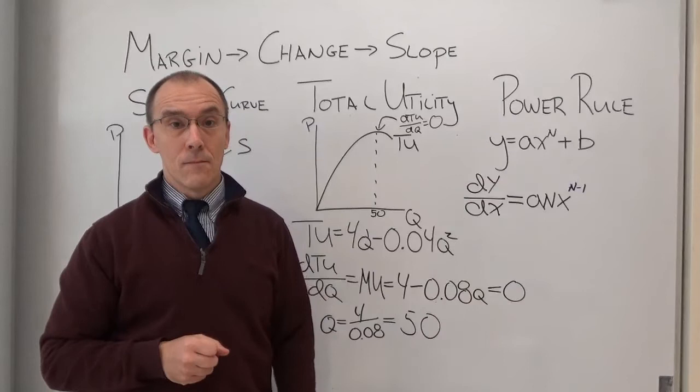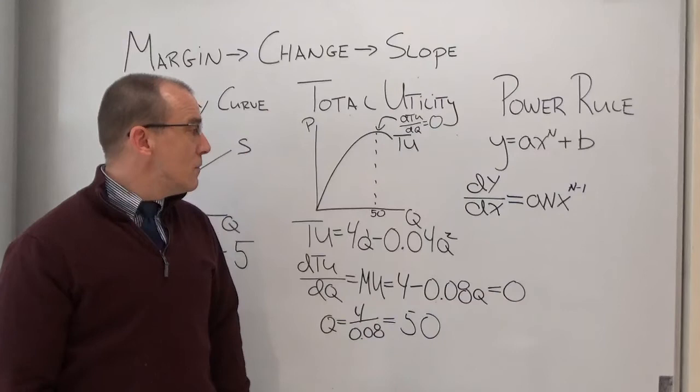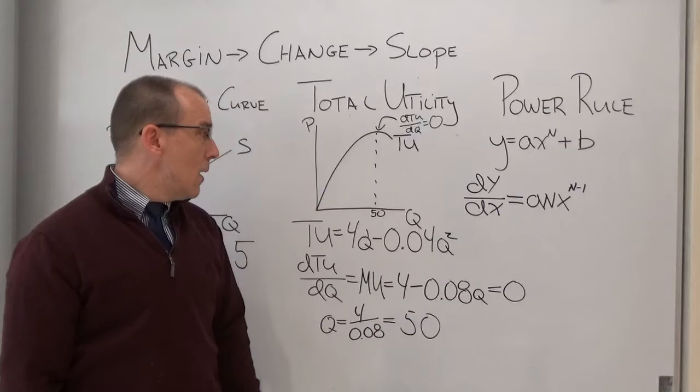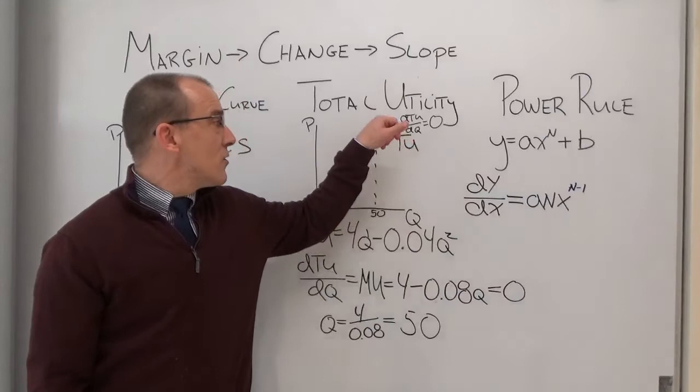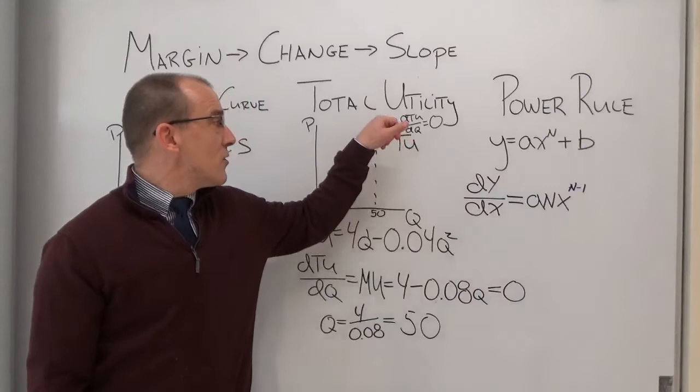So basically, the power rule, simple mathematical rule, it allows me to take the equation for this total utility curve, modify it into my marginal utility curve. Find out where the slope of that, find out where the slope of my total utility curve equals 0, and calculate out the quantity that I need.